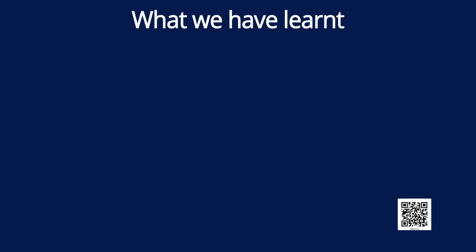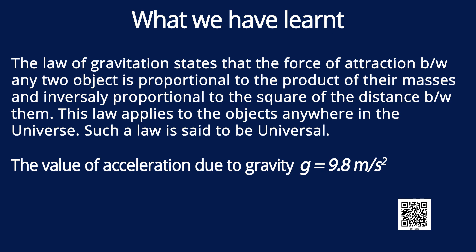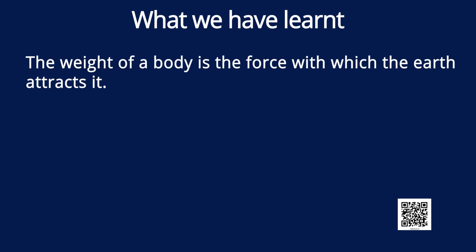Now let us see what we have learned in this chapter. The law of gravitation states that the force of attraction between any two objects is proportional to the product of their masses and inversely proportional to the square of the distance between them — this law applies to objects anywhere in the universe, so it is called universal. The value of acceleration due to gravity small g equals 9.8 meter per second square. The force of gravity decreases with altitude and also varies on the surface of earth, decreasing from poles to equator. The weight of a body is the force with which the earth attracts it.